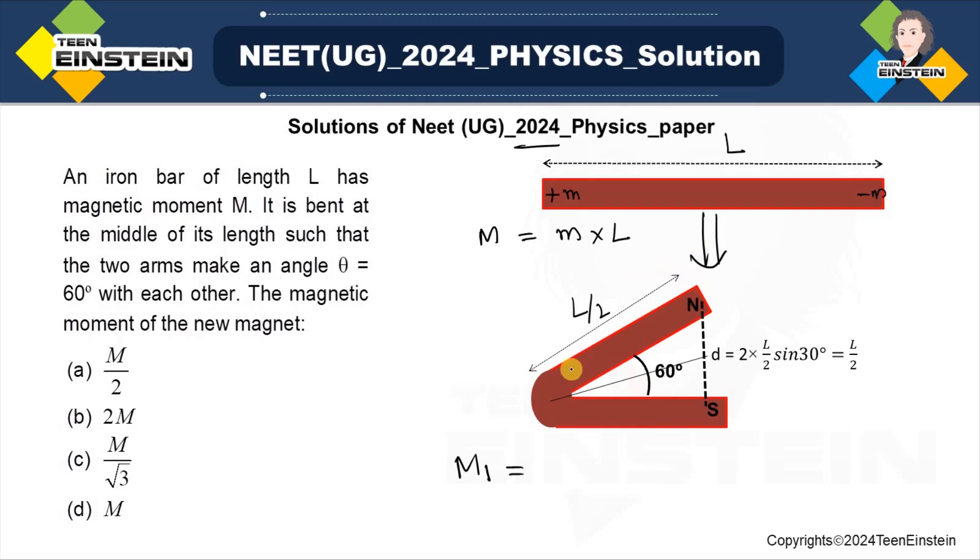See, here, since it is just bent it is not broken, so the pole strengths are situated at these ends itself. Now we have got the strength pole strength m itself but what is different is this length, the distance between these two is not the L over here. In this case if I say this distance is D,